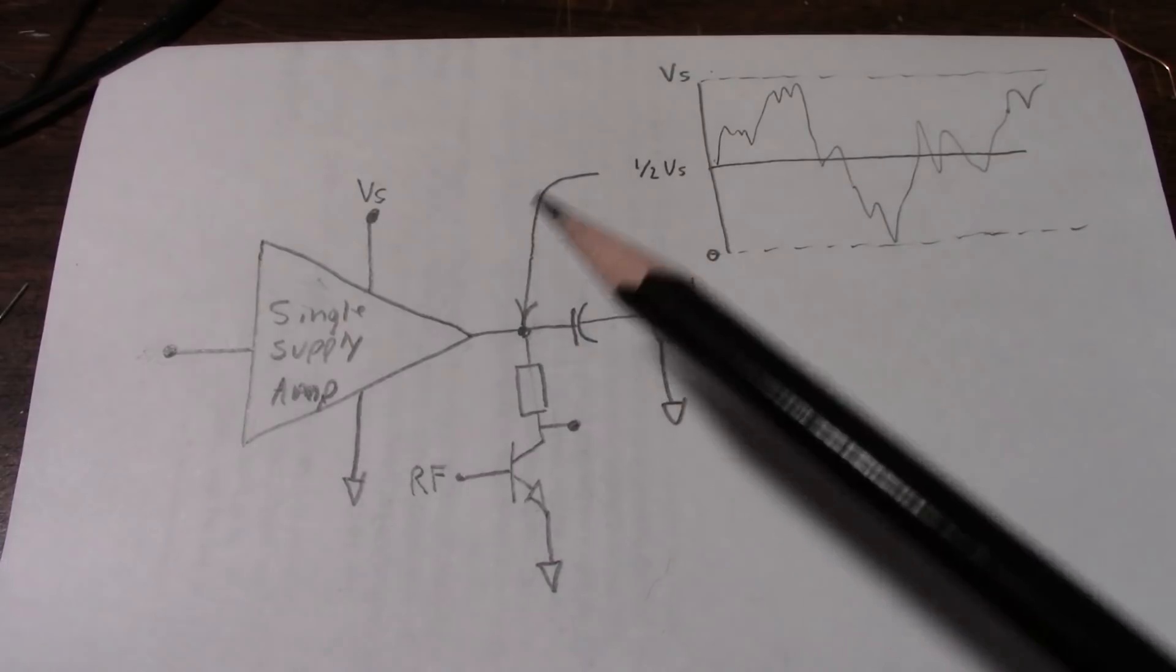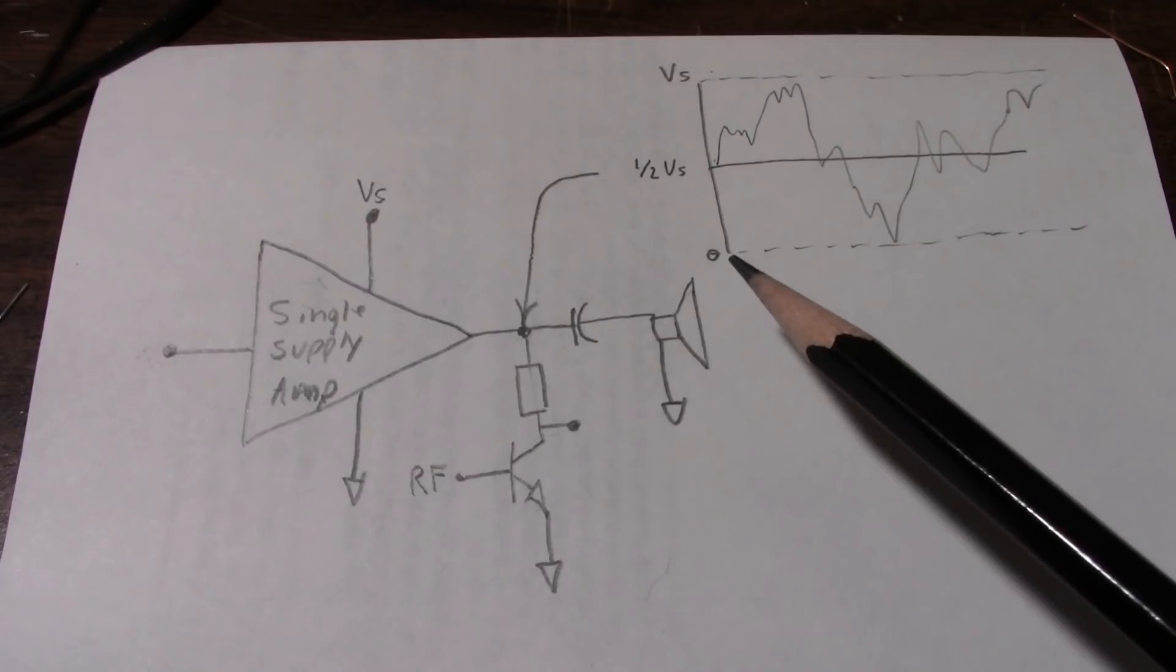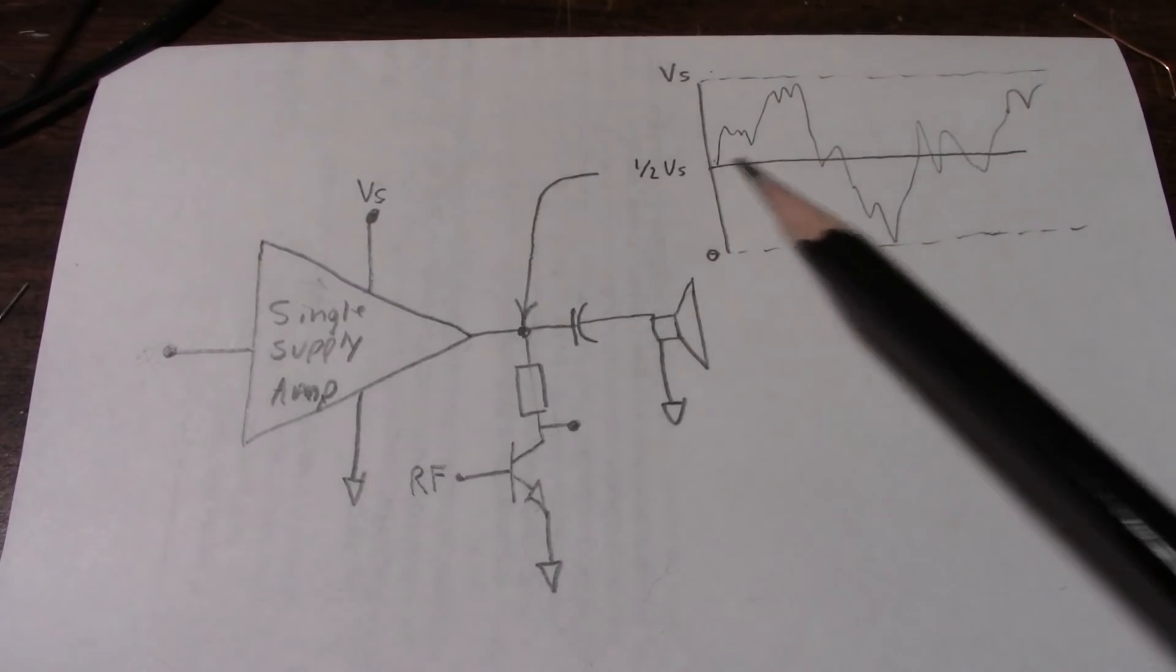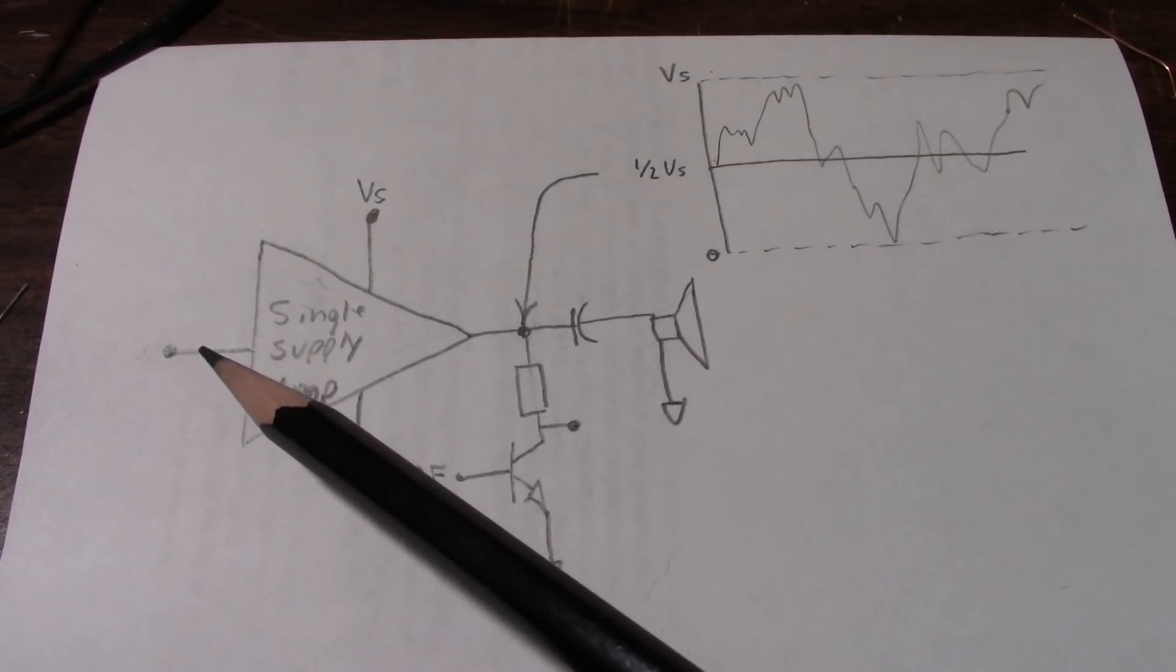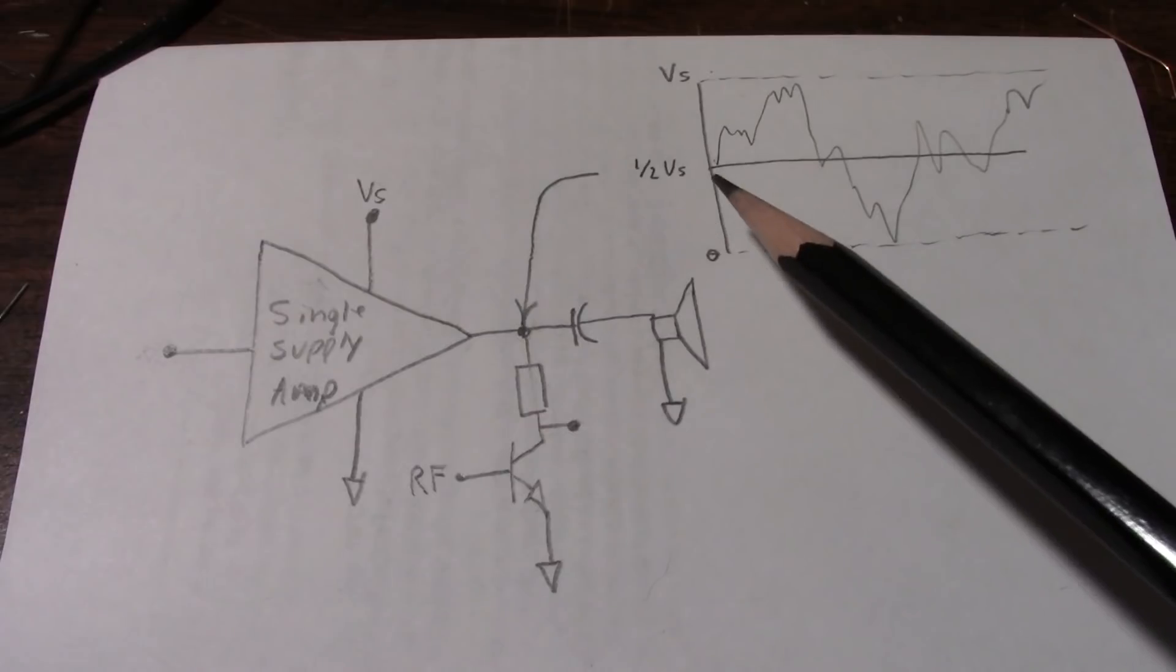Now if you scoped the output before the capacitor, it would look something like this. You have your idle voltage here at half the supply. And if you put a signal on the input, it would vary around that one half supply voltage.